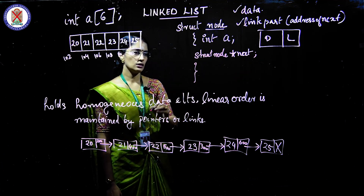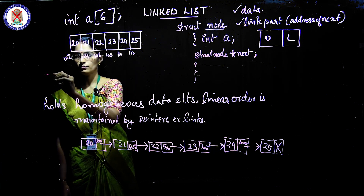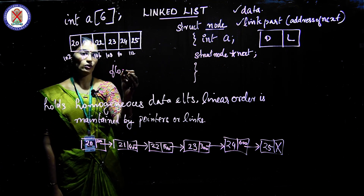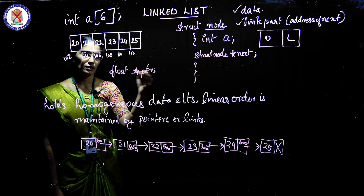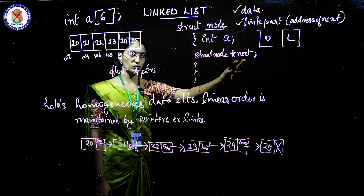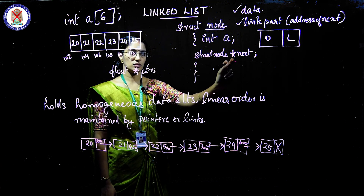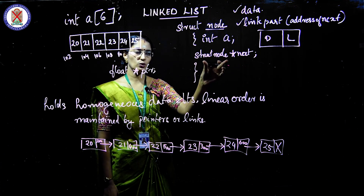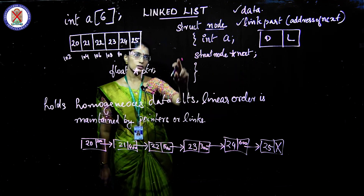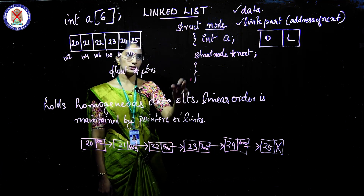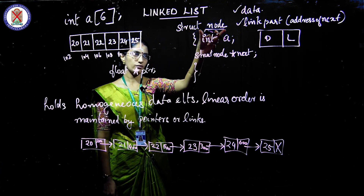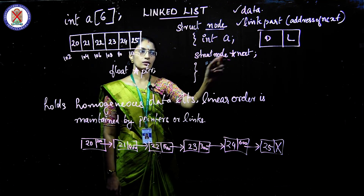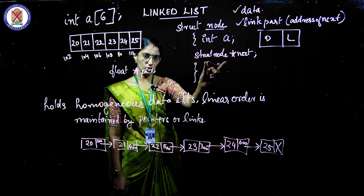To clarify the pointer data type: if a pointer points to a float element, you write 'float *ptr'. Similarly here, since the pointer points to the next node, the data type is 'struct node' and the variable is '*next'. So the full programming structure is: struct node { int a; struct node *next; }.